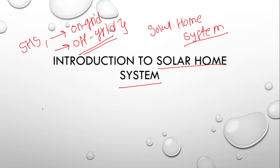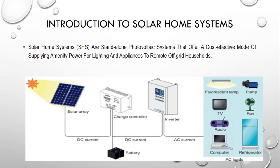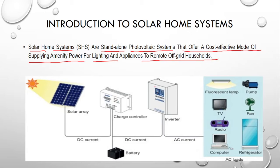Generally, to fulfill the need of home appliances or home consumers in the residential sector for smaller sectors, we use the solar home system. Basically, solar home systems are stand-alone photovoltaic systems that offer a cost-effective mode of supplying power for lighting and appliances to remote off-grid households.